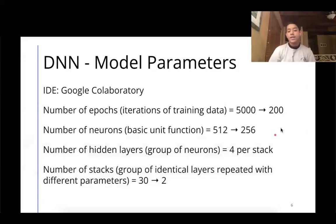The number of hidden layers - groups of neurons - we decided to keep at one stack. The number of stacks - groups of identical layers repeated with different parameters - was initially set to 30, but we brought it down to 2. While these differences might seem dramatic, they ended up having almost no performance impact.